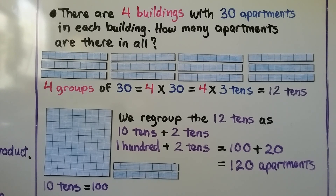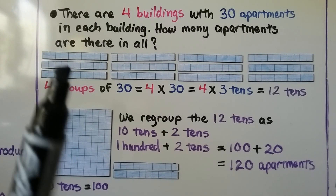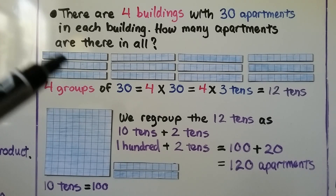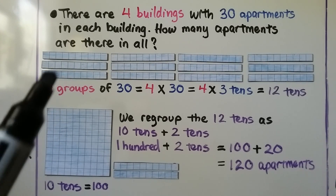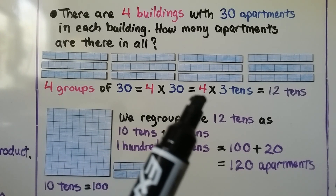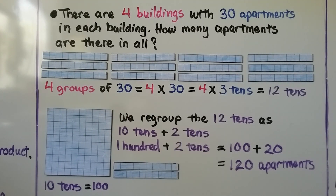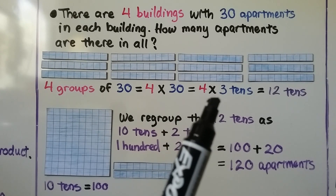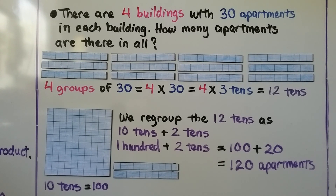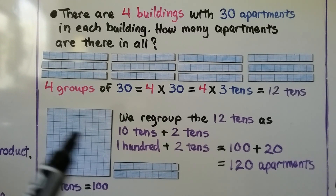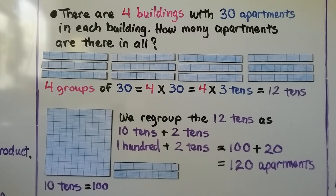There are 4 buildings with 30 apartments in each building. How many apartments are there in all? We have 4 buildings, each with 3 strips of 10 to represent 30. So we have 4 groups of 30, equal to 4 times 30, which is 4 times 3 tens. Our basic fact is 4 times 3 equals 12, so 4 times 3 tens equals 12 tens. We regroup 12 tens as 10 tens plus 2 tens — that's 100 plus 20 — giving us 120 apartments in all.